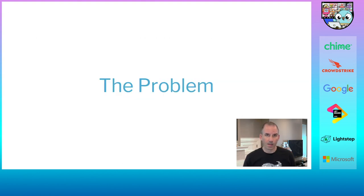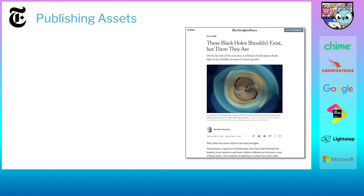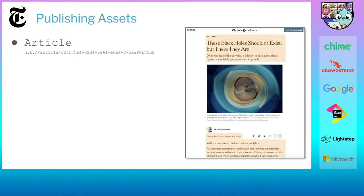Let's talk about the problem we are facing. First, some background about how we publish articles at the New York Times. We use the term publishing assets. When you see something on our website, like an article about black holes, it's actually comprised of multiple assets. The first asset is called an article. It has a unique ID — a URI — like 'nyt://article' with a UUID after it. Every article has its own unique ID. The article has components: the kicker at the top, the summary text, the headline, and the body. All of this data is captured inside the article asset.